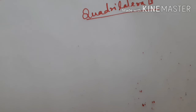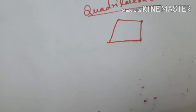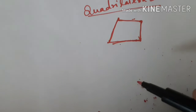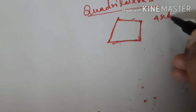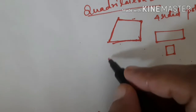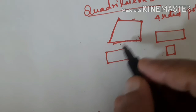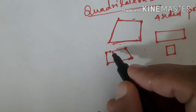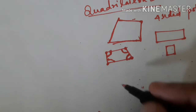Next is quadrilaterals. This name is new for you but the figure you know. It is a four-sided polygon — one, two, three, four sides are there. A four-sided polygon is known as a quadrilateral. A rectangle is a quadrilateral, a square is a quadrilateral — any figure with four sides is a quadrilateral. Now see how many angles a quadrilateral has. There are four vertices — one, two, three, four corners — so there will be four angles.